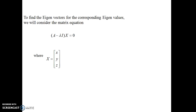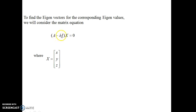The very first step in finding the eigenvectors is we have to consider the matrix equation A minus lambda I times x equal to 0, where x is a column matrix [x, y, z] and lambda is the eigenvalues that we have computed earlier. So if we have got three different eigenvalues, substitute the values of lambda, solve the matrix equation, and get the various values of x, y, z. The final answers of x, y, z are your eigenvectors.